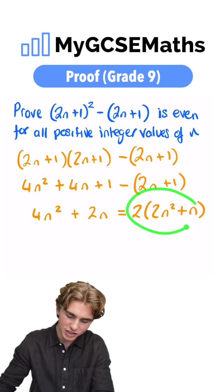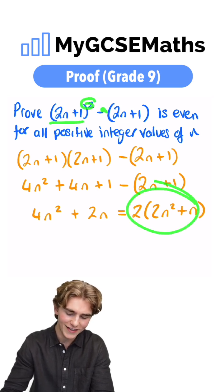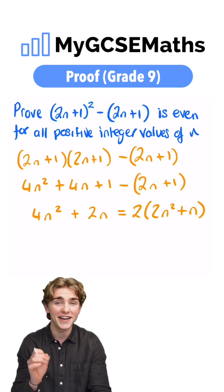That is how we're going to show that 2n plus 1 squared take 2n plus 1 is, in fact, even.